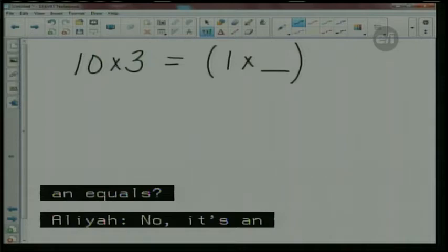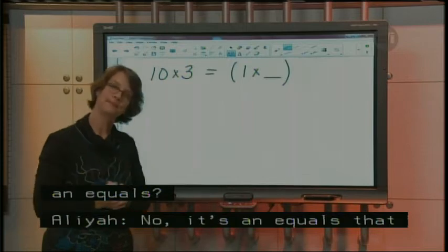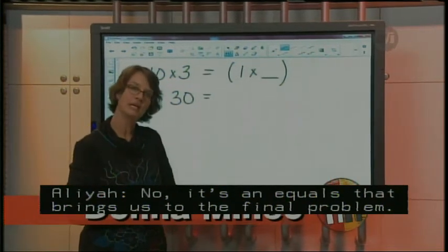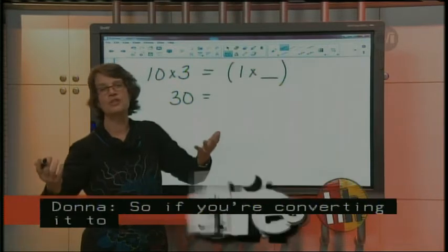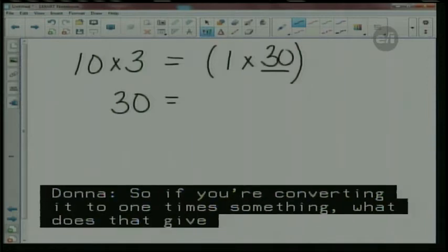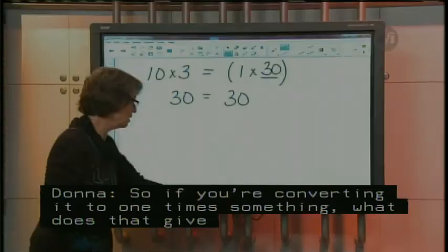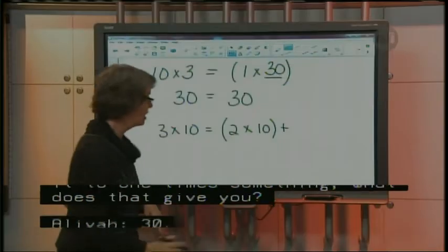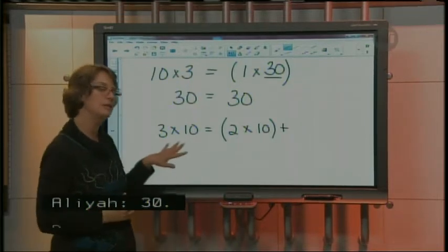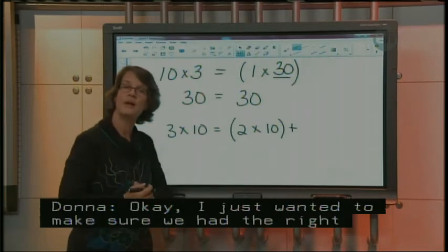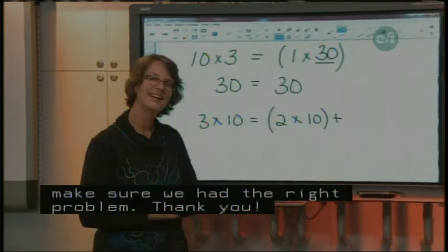Now, do you know what ten times three is? Yes. What is it? Thirty. Thirty. So if you're doing, if all you're going to do is convert it into one times something, what would that number have to be? One times what gives you thirty, honey? Thirty. One times thirty gives you thirty, right? Okay. Alright. Now, when you called in earlier, I think you had three times ten is equal to, and then in parenthesis, two times ten plus something? No. Okay, alright. I just wanted to make sure that we didn't have the wrong problem on the board for you. You can work out the rest of your questions and call Dial-A-Teacher back and they will help you and make sure you have them all correct, okay? Alright. Thank you.